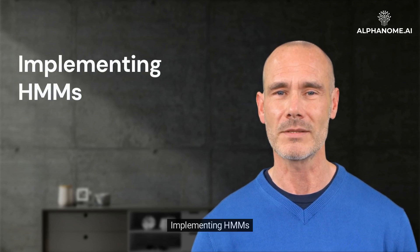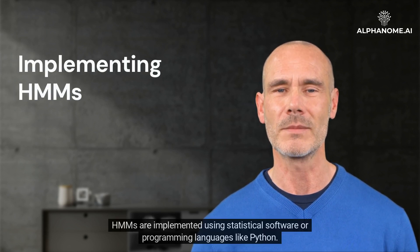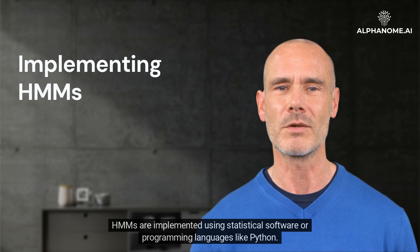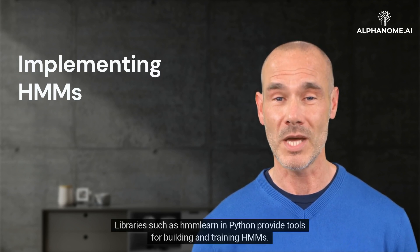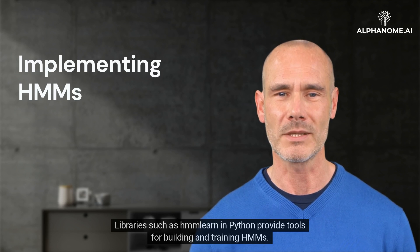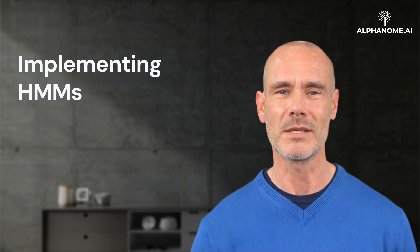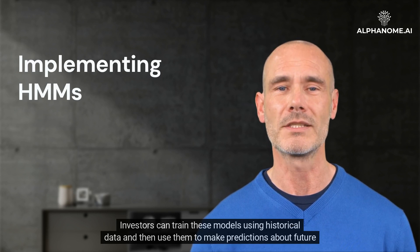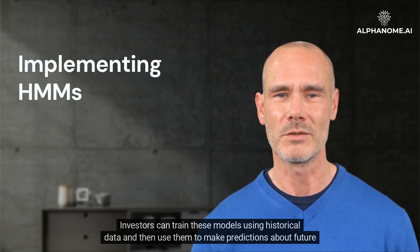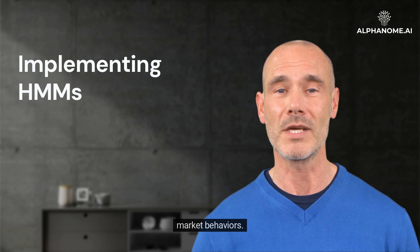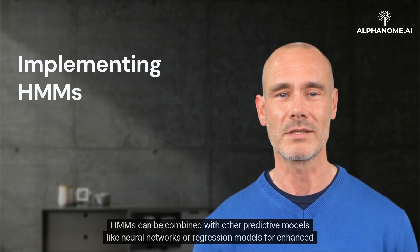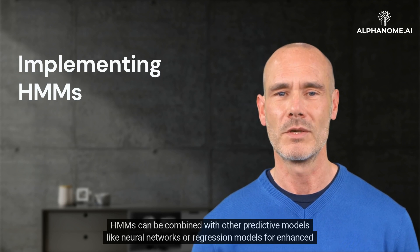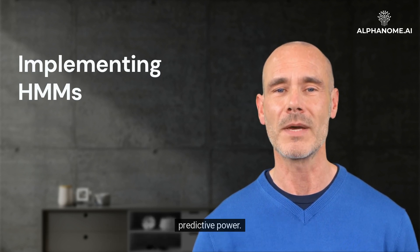Implementing HMMs: HMMs are implemented using statistical software or programming languages like Python. Libraries such as HMM Learn in Python provide tools for building and training HMMs. Investors can train these models using historical data and then use them to make predictions about future market behaviors. HMMs can also be combined with other predictive models like neural networks or regression models for enhanced predictive power.